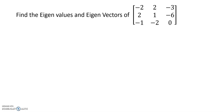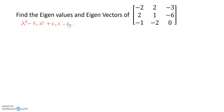First, let us find the eigenvalues using the characteristic equation. The characteristic equation of a 3 by 3 matrix is: lambda cubed minus S1 lambda squared plus S2 lambda minus S3 equals 0.